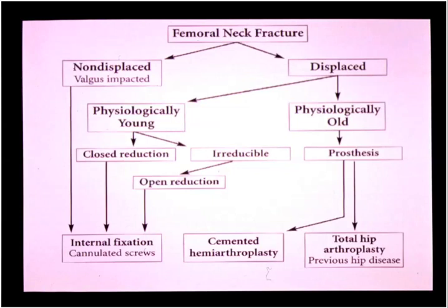For a displaced fracture, you consider whether the patient is physiologically young or old. If physiologically young, you can consider a closed reduction in the operating room — if you obtain an anatomical reduction through closed techniques, you stabilize the patient with internal fixation with cannulated screws. However, if you are unable to obtain an anatomical reduction in a physiologically young patient, you must do an open reduction to obtain anatomical reduction and then proceed with stable internal fixation. If you have a physiologically old patient, those are the patients in which you would consider an endoprosthesis — hemiarthroplasty or total hip replacement.